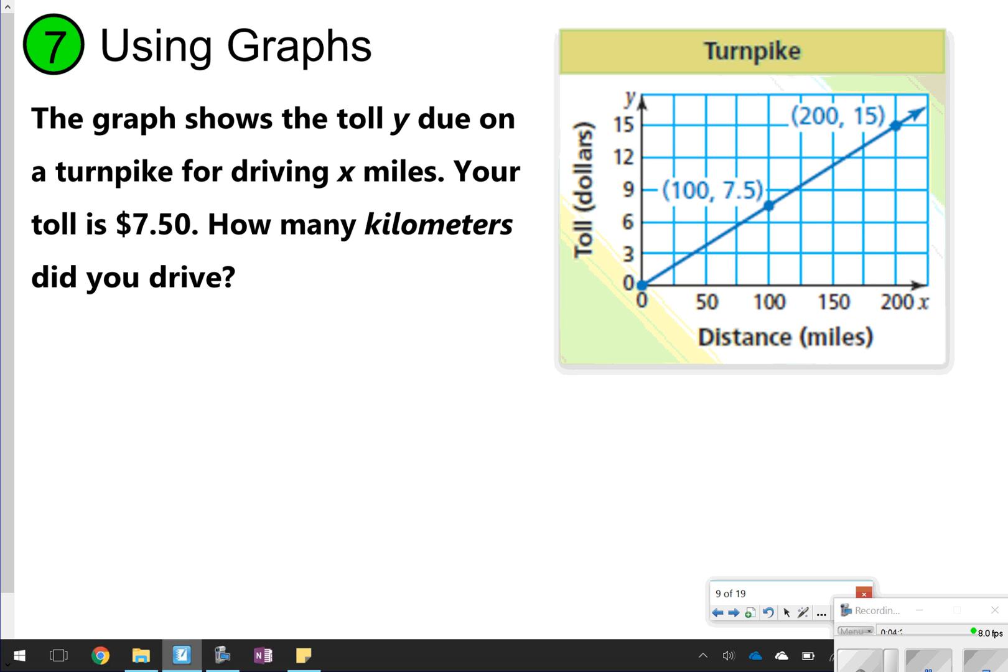Here's another one you're going to try. So it says, the graph shows the toll y due on a turnpike for driving x miles. Your toll is $7.50. How many kilometers did you drive?